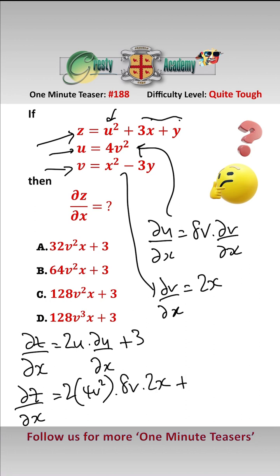And tidying all that up gives us 128v cubed x add 3 which is answer d.